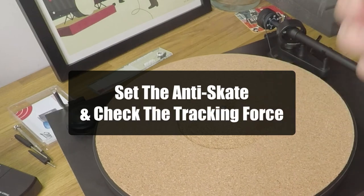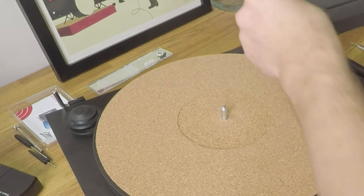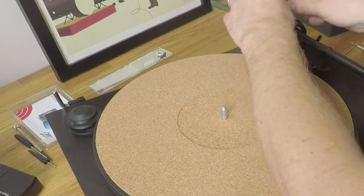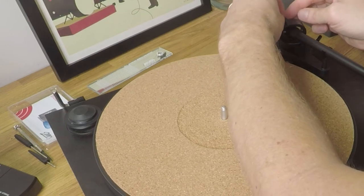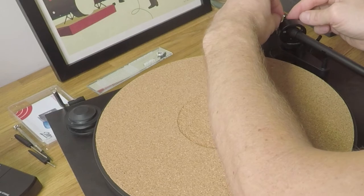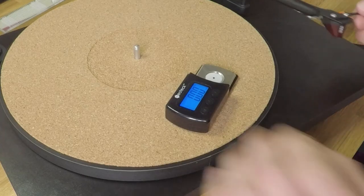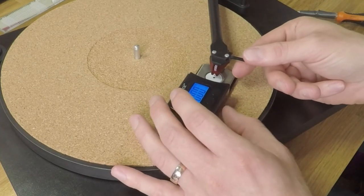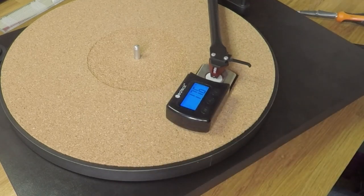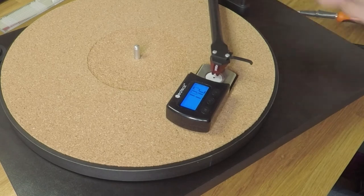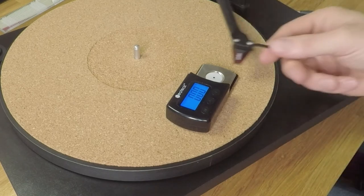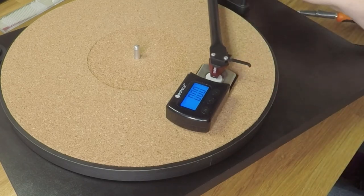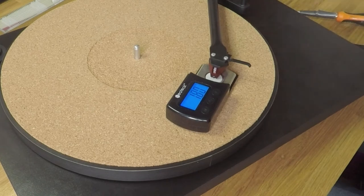Before we can spin some records, we want to set our anti-skate and finalise our tracking force. With anti-skate, different turntables have different ways of performing this function. This particular one has a counterweight that is added via a kind of fishing wire type wire. But other turntables will have dials for this function. Check your turntable manual to see how this is set. Next, we're going to finalise the tracking force. I like to use a tracking force gauge to actually finalise this and get this spot on. Obviously, you can do it the old-fashioned way like we did earlier, but using an electronic tracking force gauge such as this Neotech one here, I'll put a link in the description below, we can get that tracking force to be spot on what it should be. This particular cartridge should be 1.8 grams.